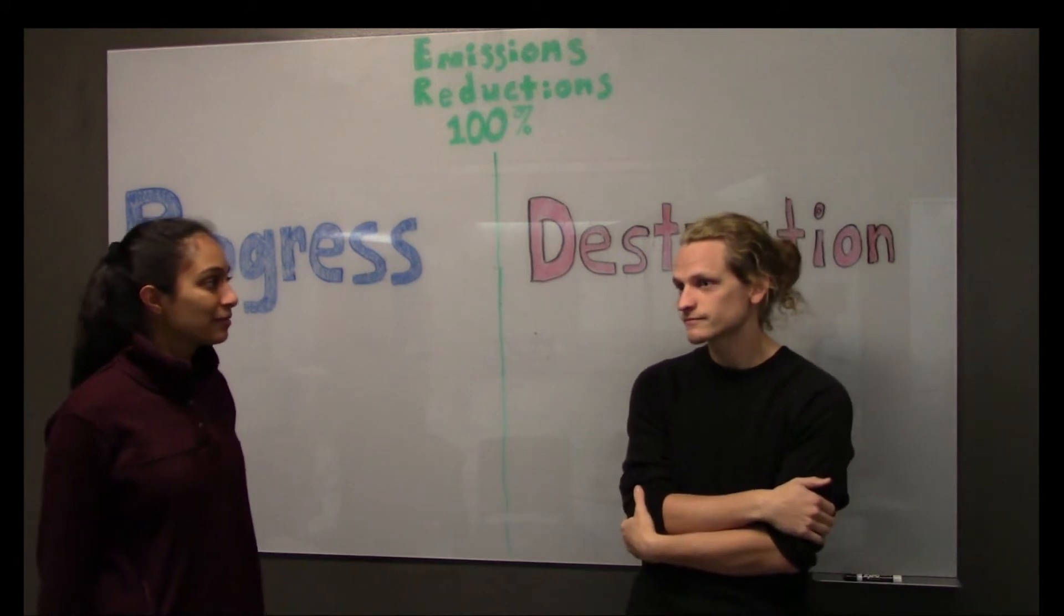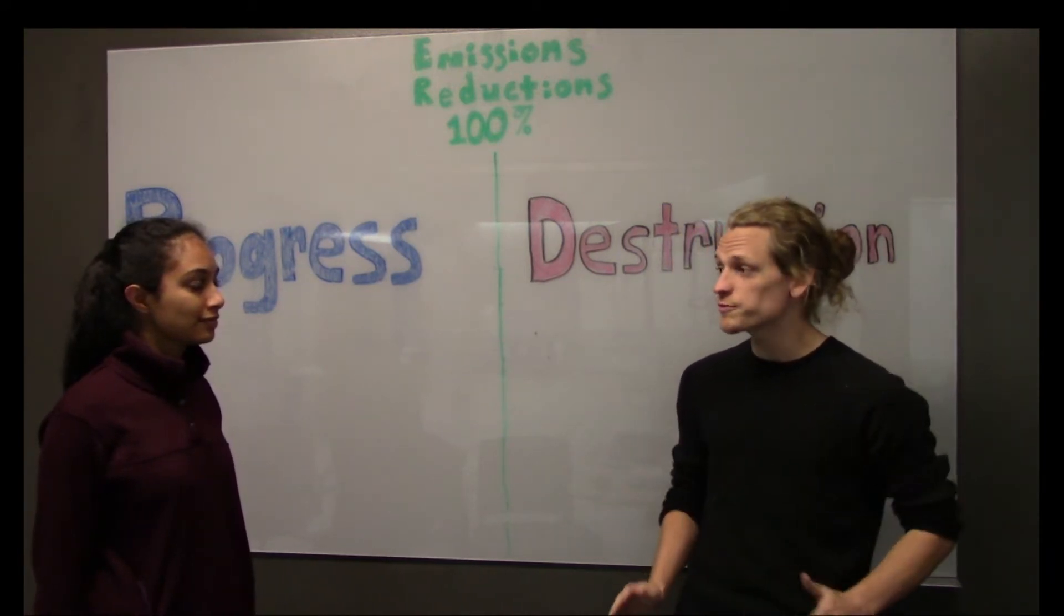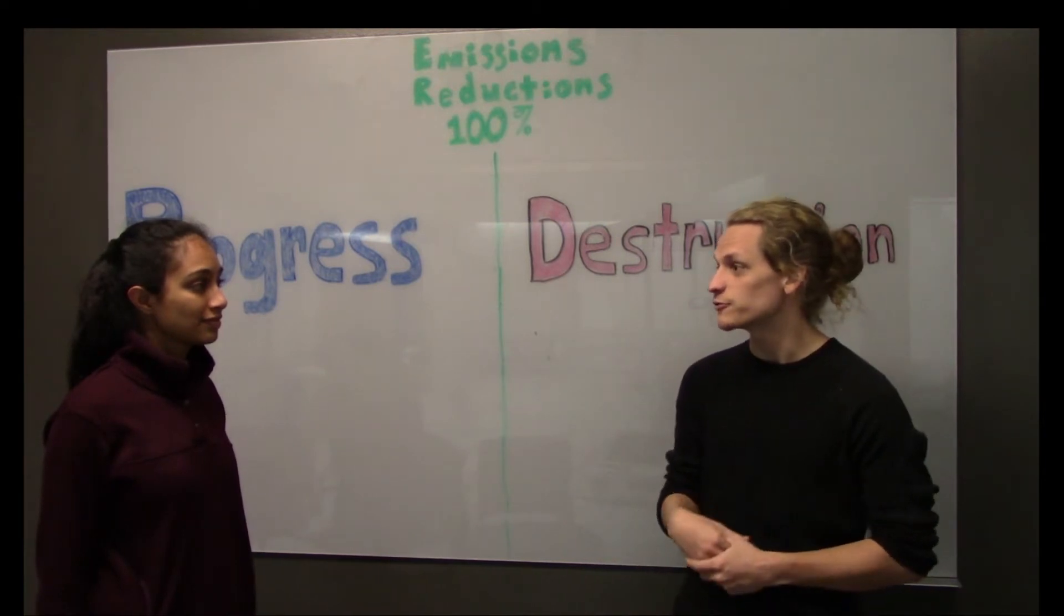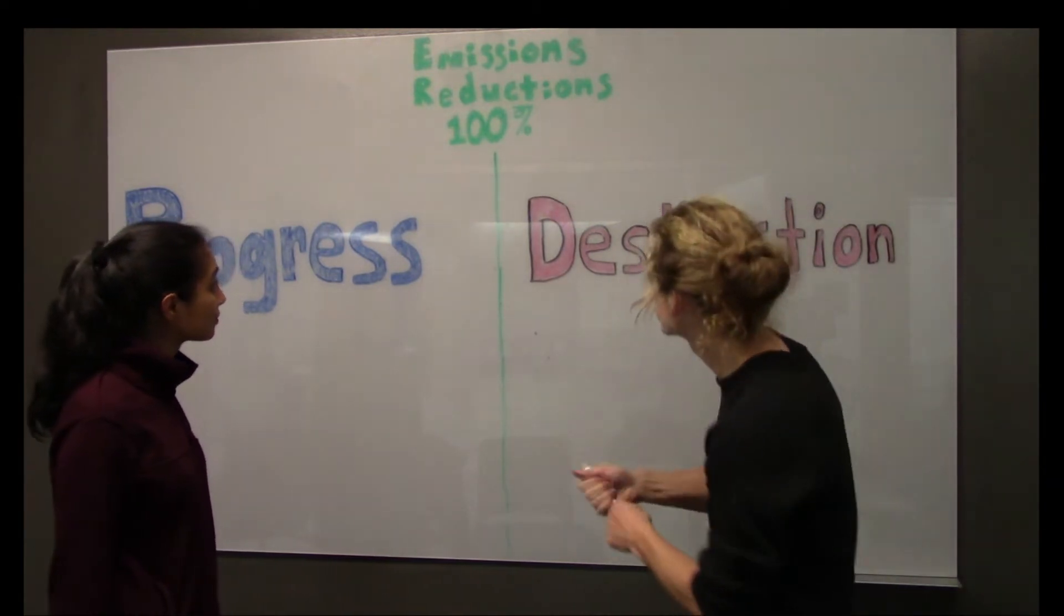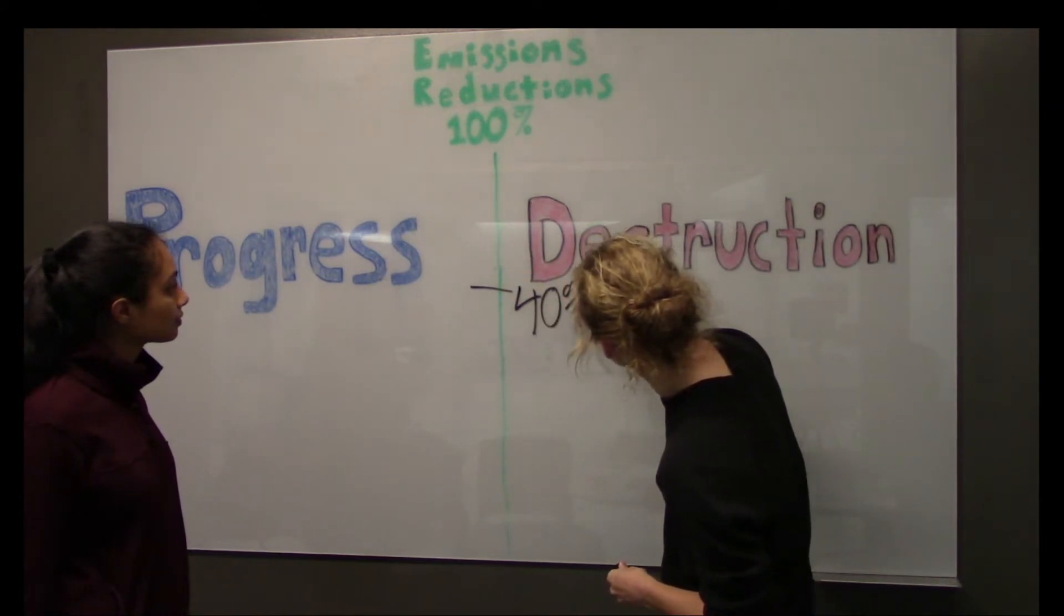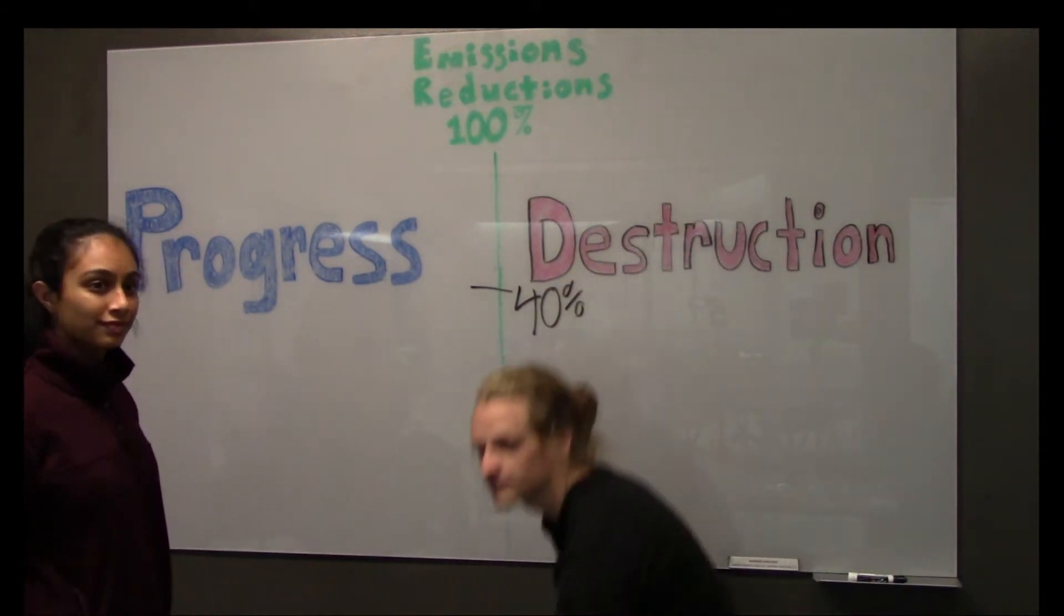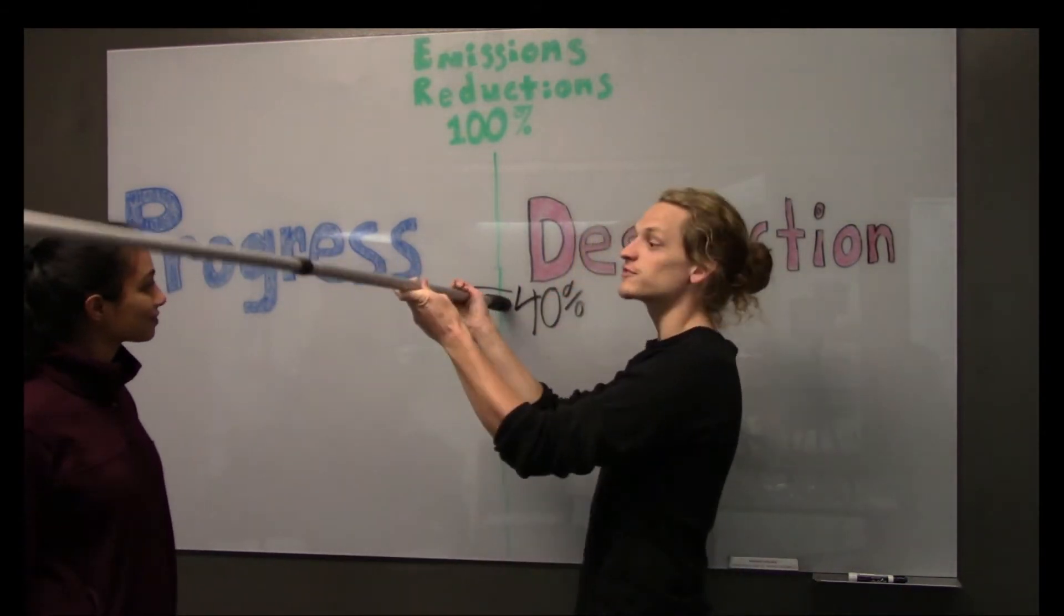What is your intended NDC, Norway? Glad you asked. We're planning on curbing our emissions by 40% from our 1990 levels. That's a pretty nice bar to set, right?